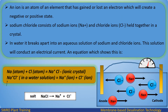An ion is an atom of an element that has gained or lost an electron, which creates a negative or positive state. Sodium chloride consists of sodium ions (Na⁺) and chloride ions (Cl⁻) held together in a crystal. In water it breaks apart into an aqueous solution of sodium and chloride ions, and this solution will conduct an electrical current.